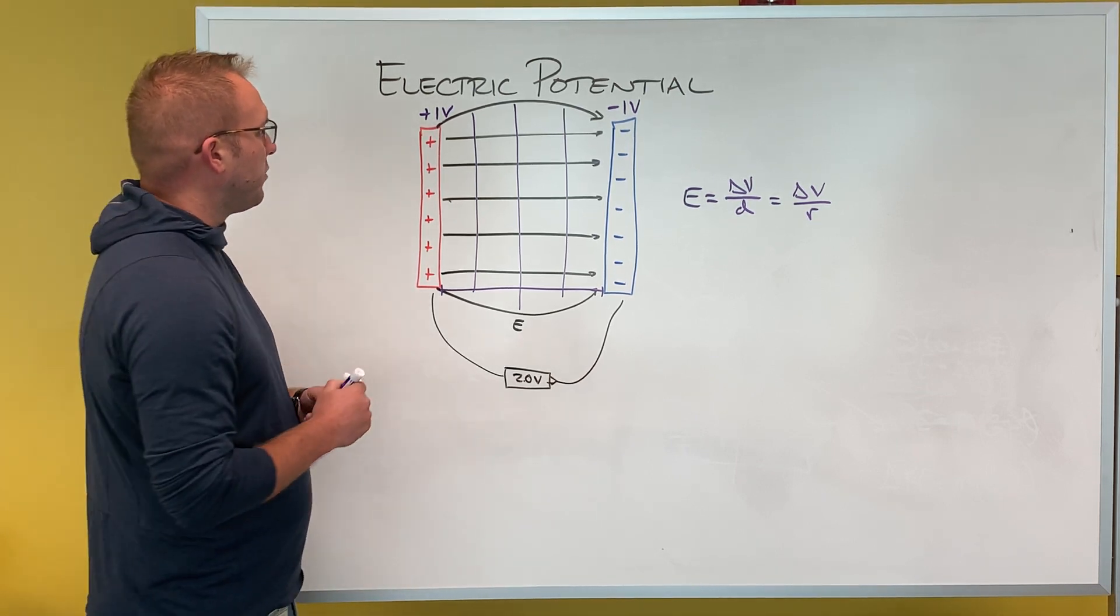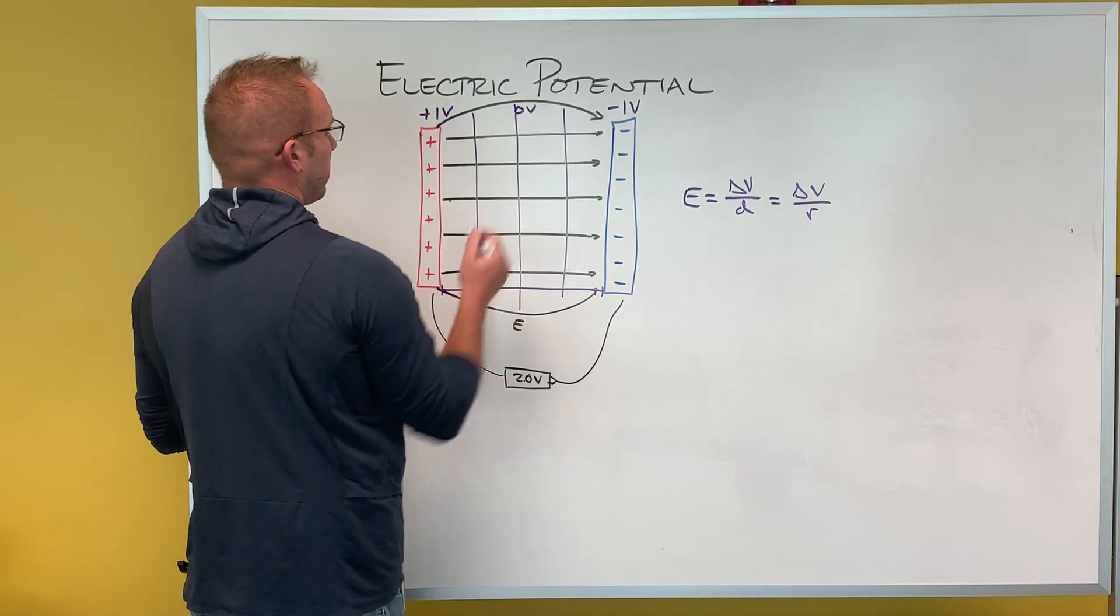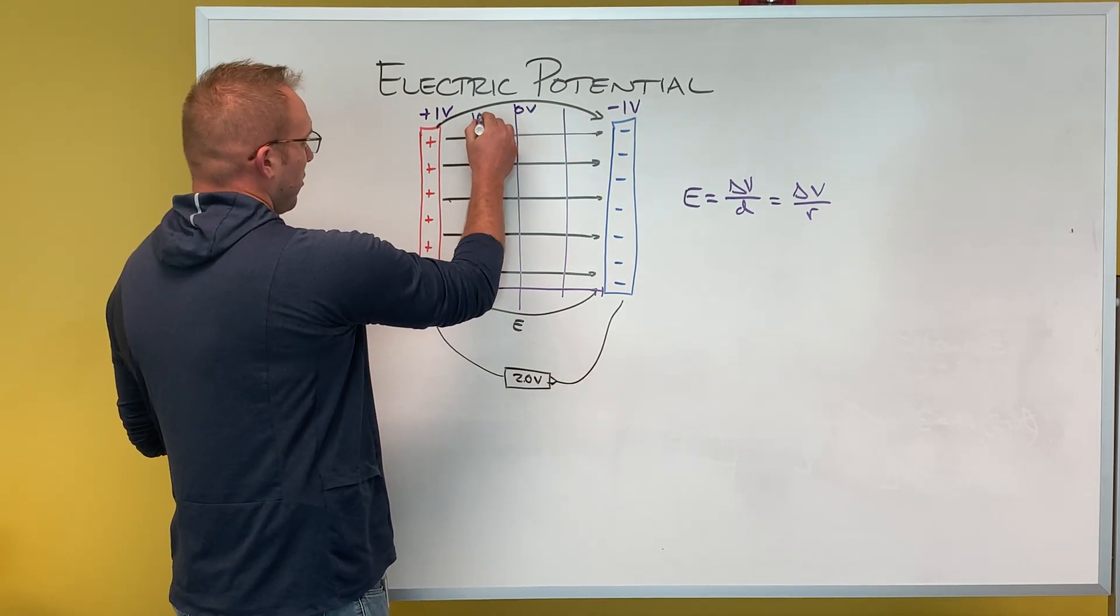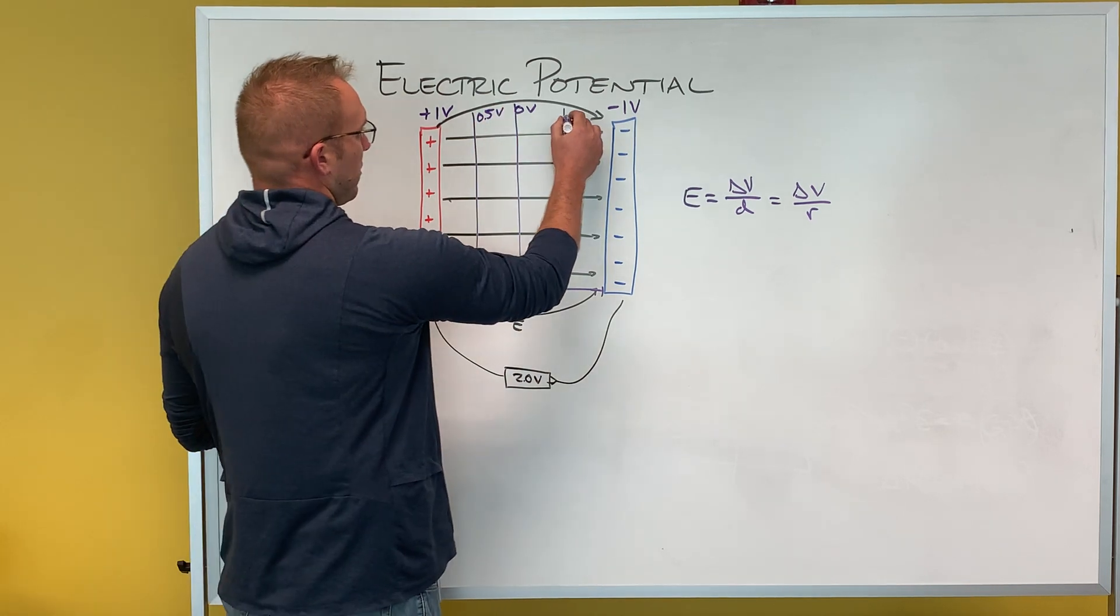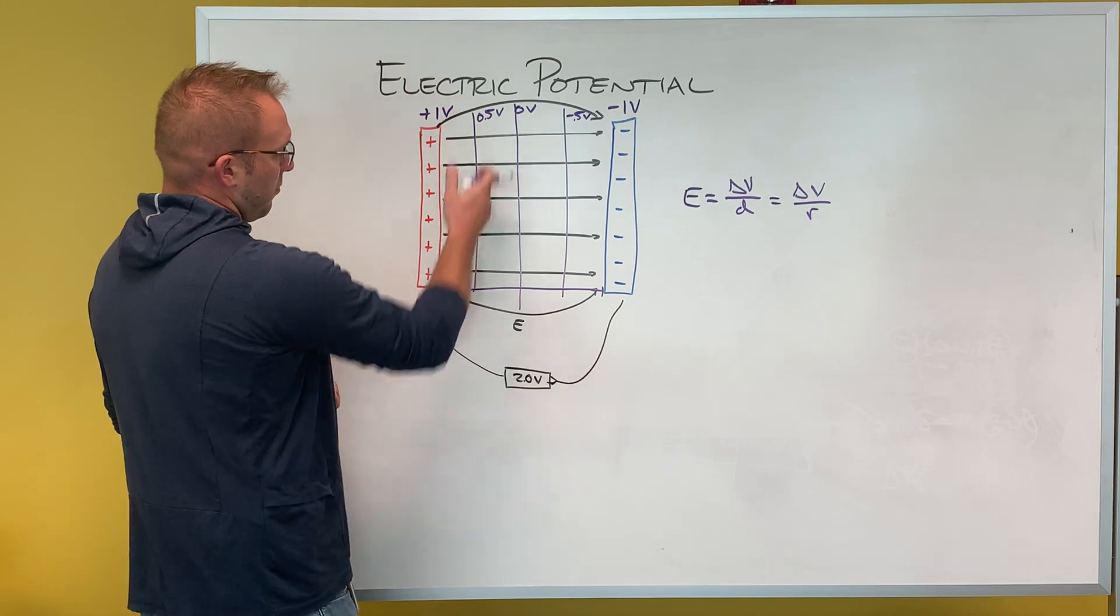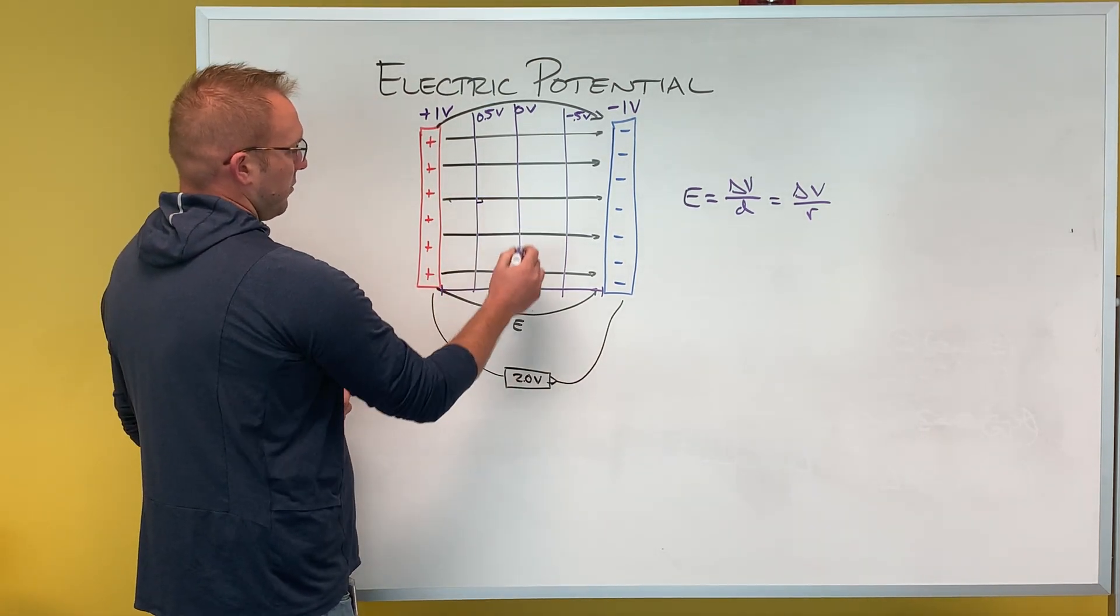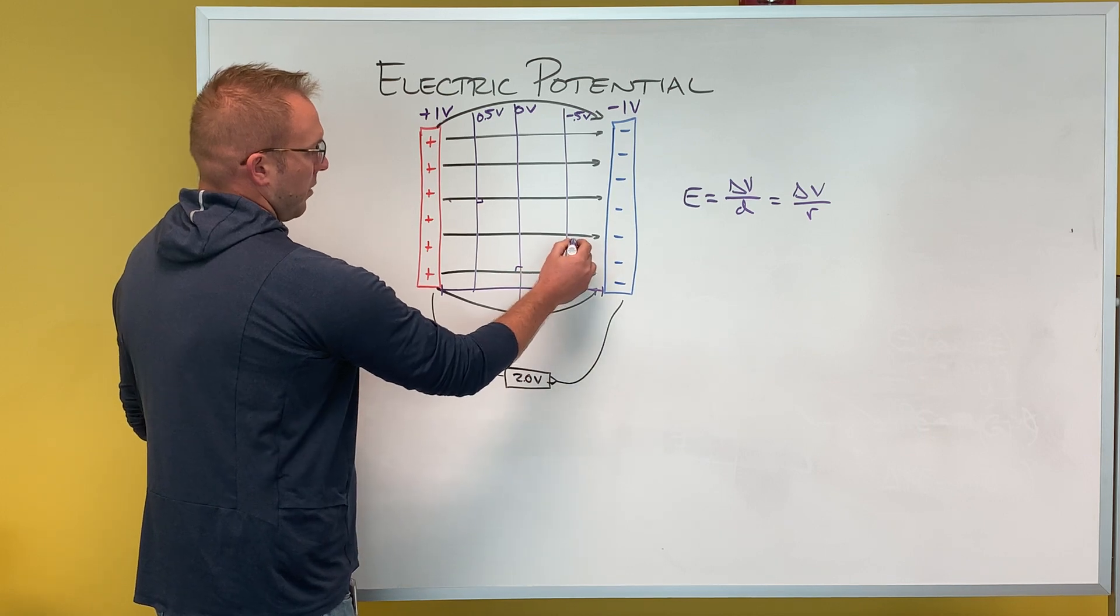And so what I'm going to do is I'm just going to show this middle is zero volts. We'll say this is 0.5 volts, so this is negative 0.5 volts for my equal potential lines. Notice again my equal potential lines are perpendicular to my electric field lines.